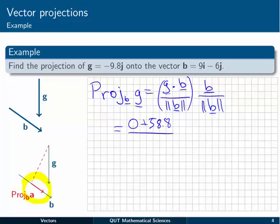We need to divide that by the magnitude of b, which is the square root of the sum of the squares of the coefficients. 9 squared is 81, and 6 squared is 36. So we have 117. We have the same quantity again underneath b, and the b vector itself on the top here, 9i minus 6j.